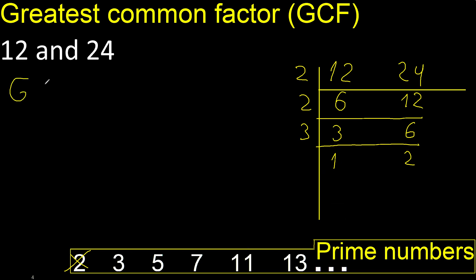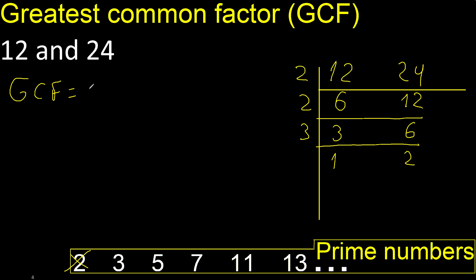Therefore, 2 multiplied by 2 is 4, 4 multiplied by 3 is 12. Finish.